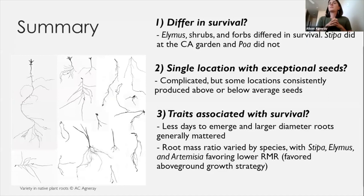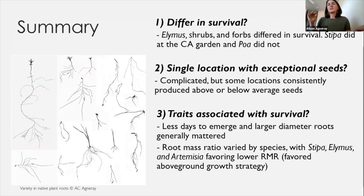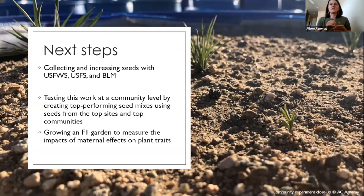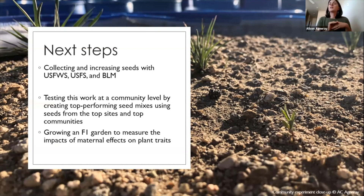To summarize: despite being collected from very similar climates, our seed sources were different from each other — apart from Poa secunda — in survival. We found several locations with really high-performing seeds across all of the species collected, which might indicate some community-level adaptation is occurring. And finally, there were a few traits generally predictive across all species of survival, like fast emergence and thick roots. These findings are translating into action right now, where we made SOS collections of our top-performing seeds and are working to get them increased for use in future restoration projects. We're also growing an F1 garden using all these same seeds to ask what the maternal effects are on these traits, and we created seed mixes using the top populations to understand whether trait-based work might have impacts on a community when planted together.